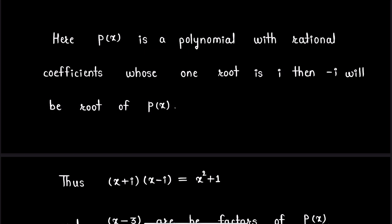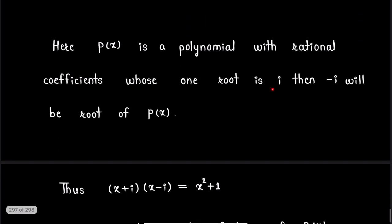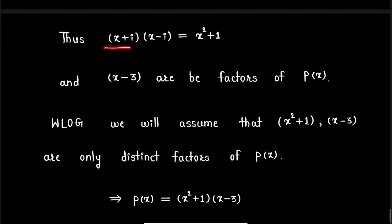So by this result, complex conjugate of iota, that is minus iota, will also be a root of polynomial P(x). Thus we have (x+i)(x-i) = x²+1 and (x-3) are factors of polynomial P(x).